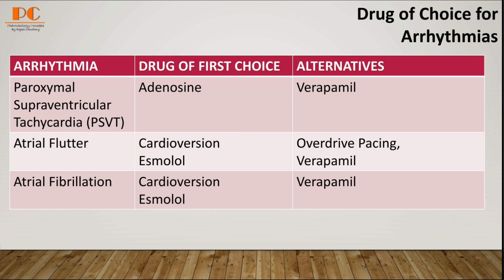For atrial fibrillation, we can use cardioversion and esmolol as the first choice, and verapamil as an alternative.